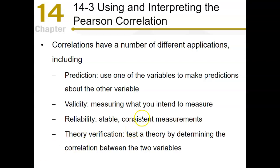How do we use correlations? One major use is prediction. If you have a strong relationship between two variables, you can predict the value of one variable based on another. You can take an X value and make a prediction of what the corresponding Y value would be. We can also use correlations to check validity — meaning that whatever you're measuring, you're actually measuring that thing.